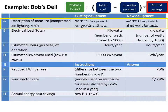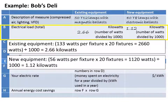Next, Bob will determine annual savings. On the annual savings chart, Bob enters a description of the measure for the existing and new equipment. To calculate annual savings for his project, Bob compares the amount he spends on electricity for the existing equipment to the amount he will spend for his new equipment. To do this, first he determines his electrical load in kilowatts for the existing and new equipment. Bob finds the number of watts by looking up the model number on the manufacturer website. In Bob's case, the T12 fixtures were 133 watts each.